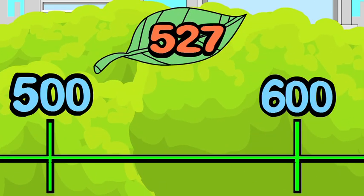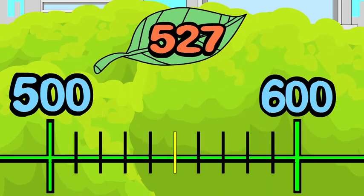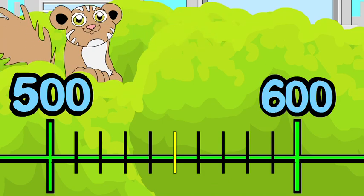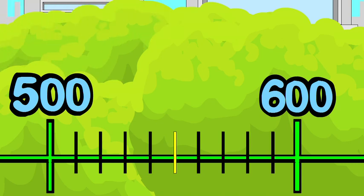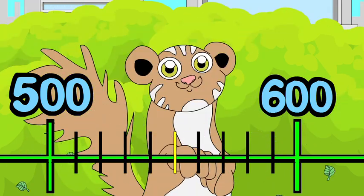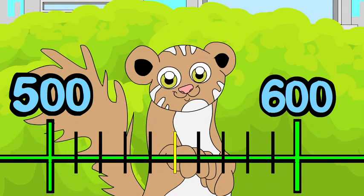Now you can set up a number line and mark your benchmarks. Step 2: find the midpoint between 500 and 600 — that's the number that is exactly in the middle. The midpoint is 550.